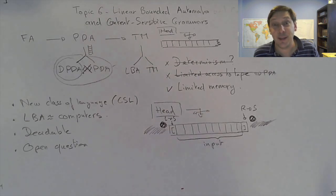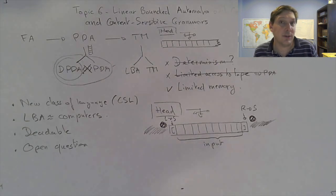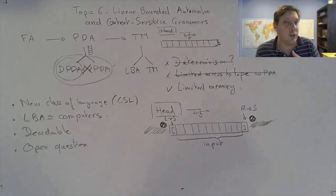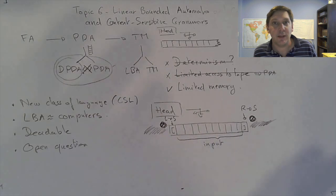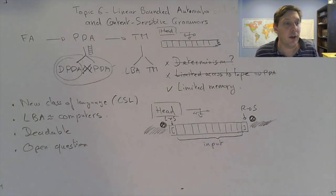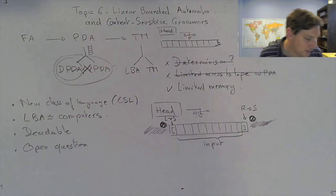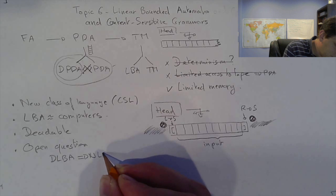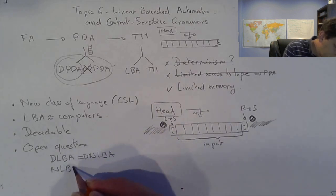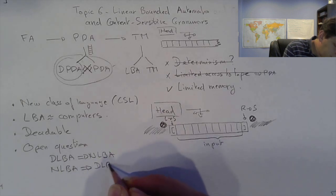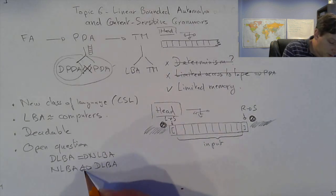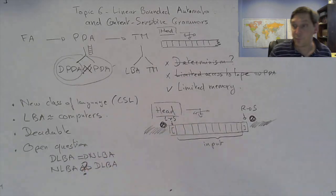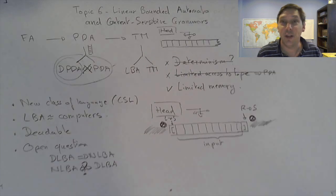We know that a deterministic LBA will recognize everything a non-deterministic LBA recognizes. The question is: are they basically equivalent? Can you go the other way around? That is a big open question — we do not know the answer. So far in our course we've seen results known for decades, but here, for the first time, we're reaching an unanswered question: is a non-deterministic LBA equivalent to a deterministic LBA?